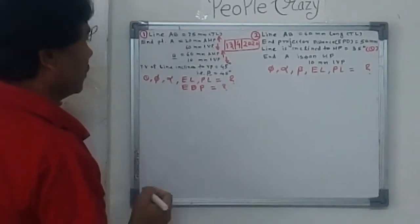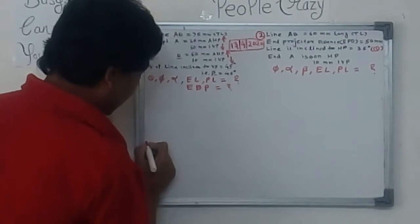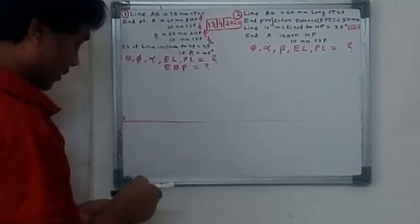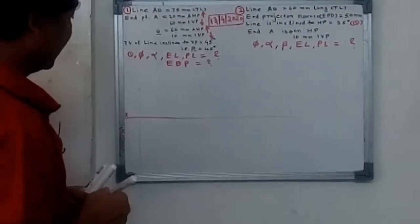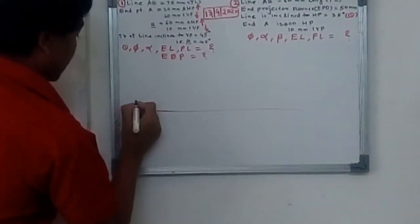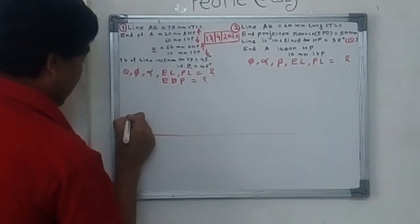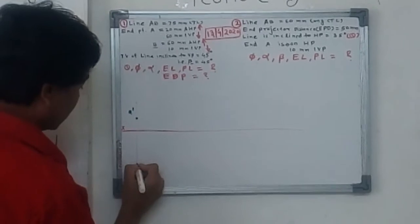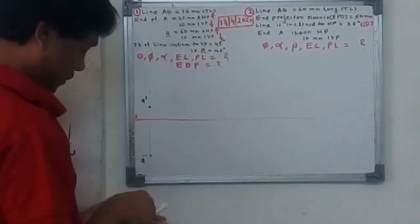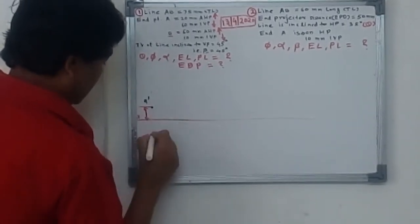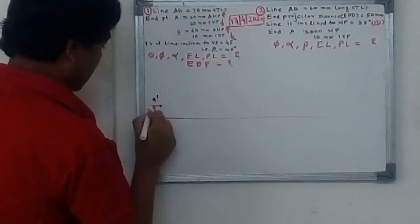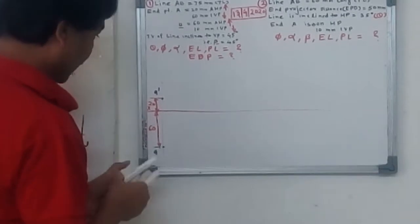Let's start with the XY line. Draw one line, then take endpoint A 20 millimeters above HP — so this is point A dash. Then take point A 60 millimeters below XY — this is 60 mm — and immediately draw the line passing through this point. The distance is 60 and this one is 20.